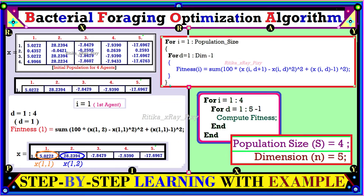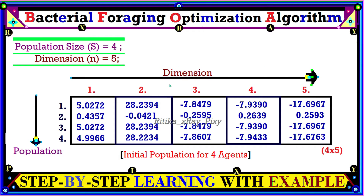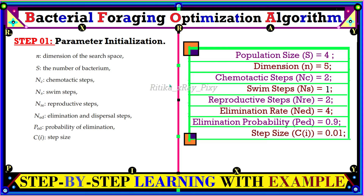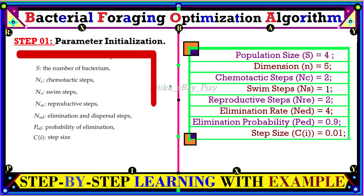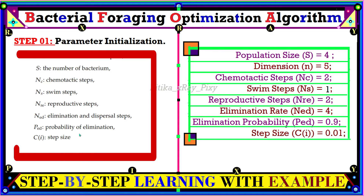In this algorithm, we will follow certain steps as usual. The first step is the parameter initialization phase, where we initialize all the important parameters used in this algorithm. For example, N denotes the search space dimension, S denotes the population size — the total number of search agents or bacteria in the current population. NC denotes the chemotactic steps, NS denotes the swim steps, then we have reproductive steps, elimination and dispersal steps, elimination probability, and C denotes the step size for the bacteria.